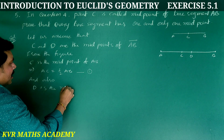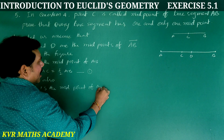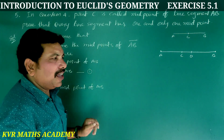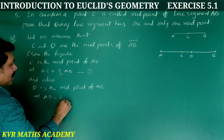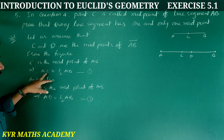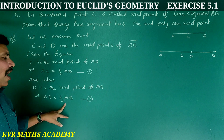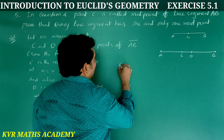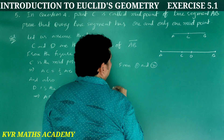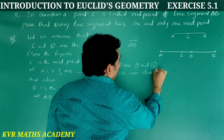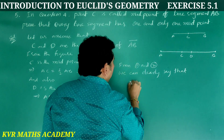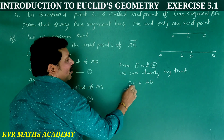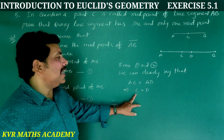Since D is also the midpoint of AB, we have AD equal to half AB — this is equation number 2. From equations 1 and 2, we can clearly say that AC is equal to AD, which implies C is equal to D.